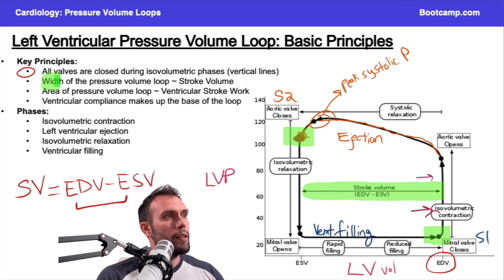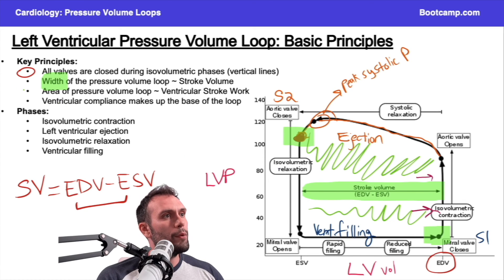Now what about the area? What if we took the area of this pressure volume loop? That will tell us the stroke work. Remember, more stroke work requires more myocardial oxygen consumption, more myocardial demand.